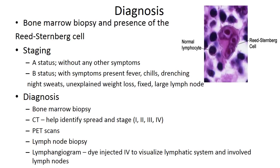Diagnosis of Hodgkin's lymphoma is confirmed by bone marrow biopsy, which reveals the presence of the Reed-Sternberg cell. The disease is staged as A-status (asymptomatic) or B-status (symptomatic, with fever, night sweats, and unexplained weight loss). CTs and PET scans are often done to identify spread and stage of the disease.